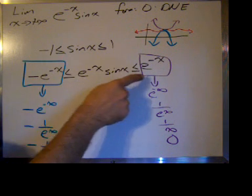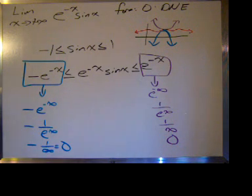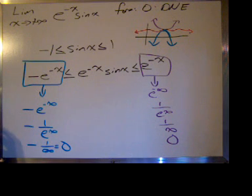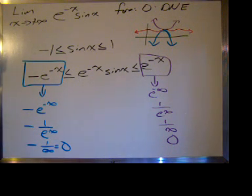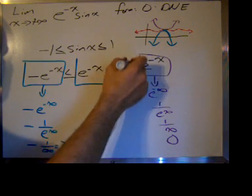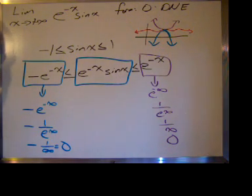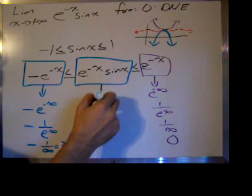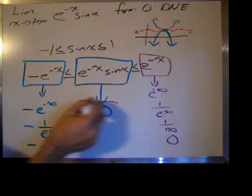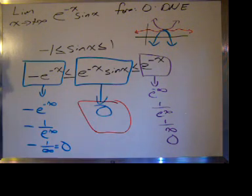So we have both of the functions that e to the negative x times sine of x is squeezed in between going to the same number, which is 0. Therefore, we can say that e to the negative x times sine of x goes to 0 as well. And that is our answer — that's how you do it.